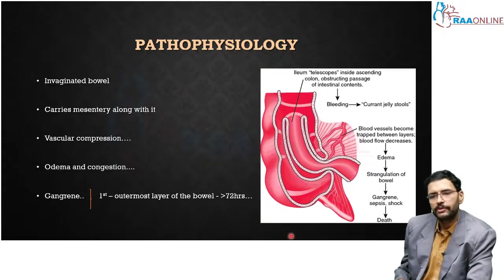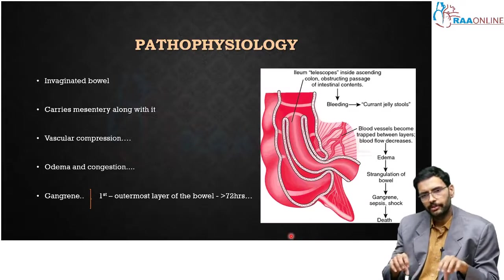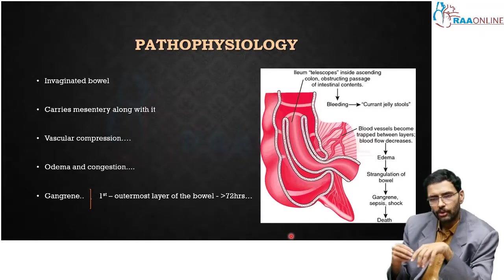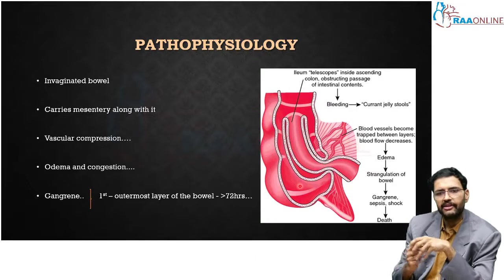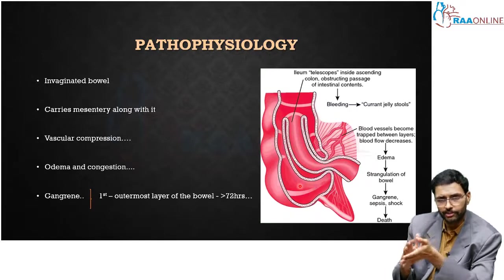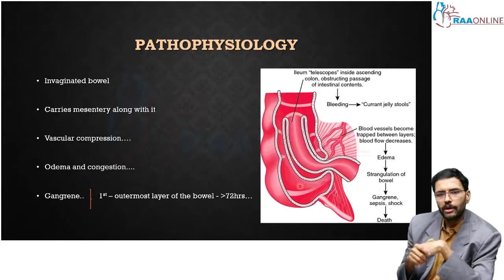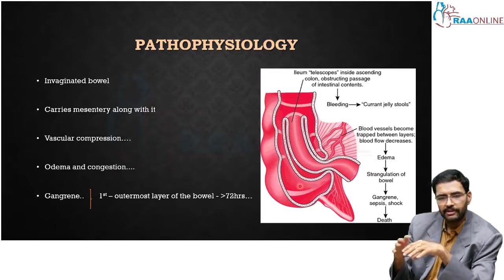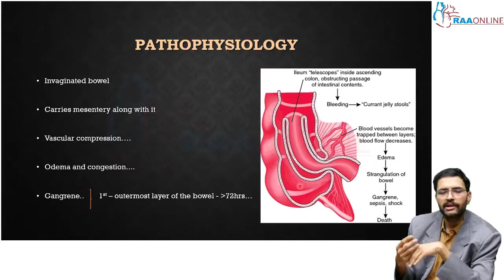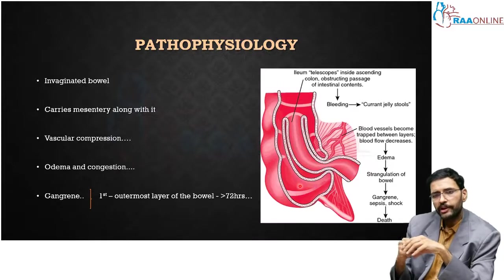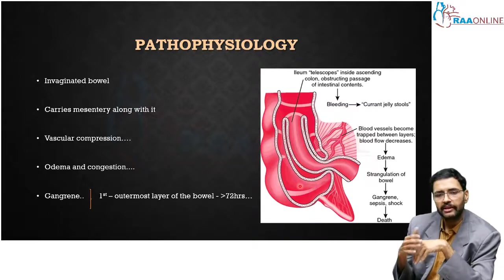In intussusception, one loop of bowel goes into the other, carrying the mesentery with it. As the mesentery enters inside, there is traction on it. When there is traction on the mesentery, first the lymphatics get obstructed, following which there is venous occlusion. Once there is venous occlusion, edema and venous congestion occur, producing increased mucus secretion and bleeding into the bowel — producing the classical red currant jelly stools. Over time, as venous congestion increases, the pressure mounts and the arterial supply gets compromised, resulting in gangrene of that bowel loop.